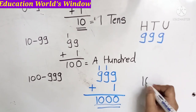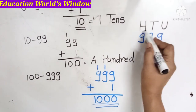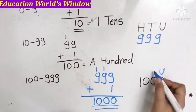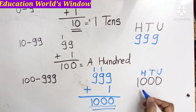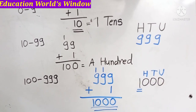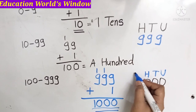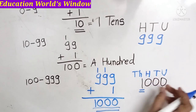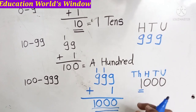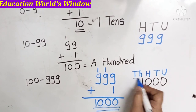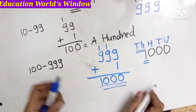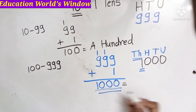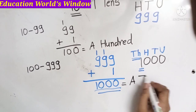So here is a 4-digit number. This has 3 places — ones, tens, hundreds — and now 4 places. What does this mean? This is 1000. One thousand — in numbers, 1,000. In words, a thousand.